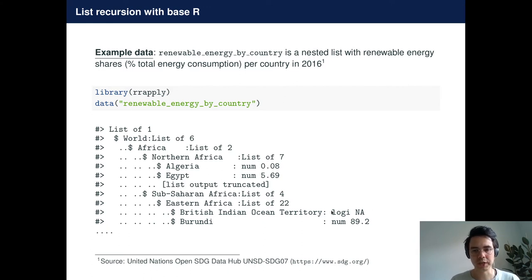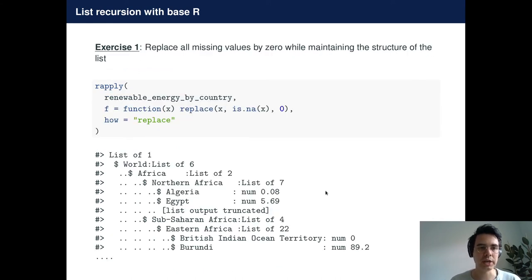So as a first example, we can try to replace these missing values by a value of zero. And this can be done using the RApplied function, which is a member of the apply family of functions in R.